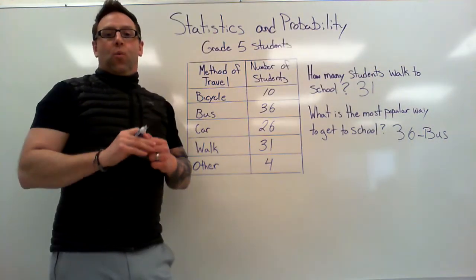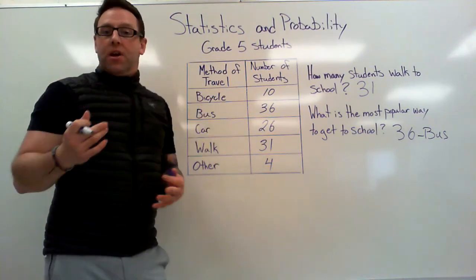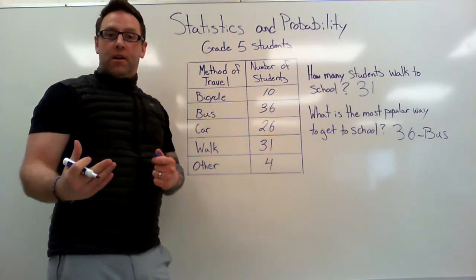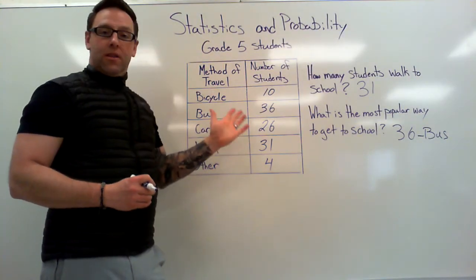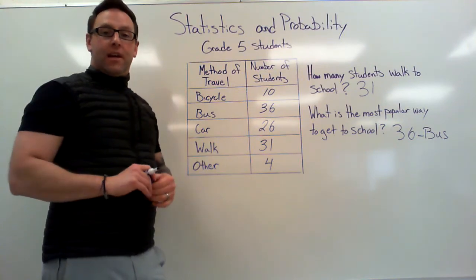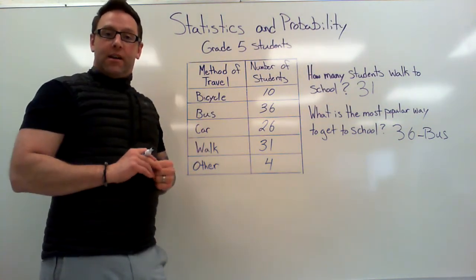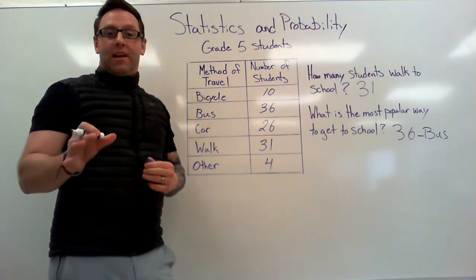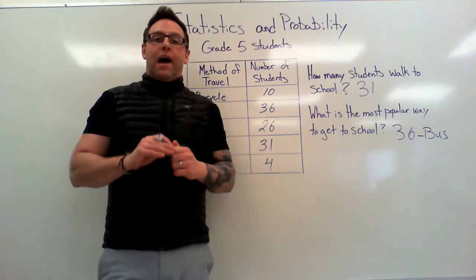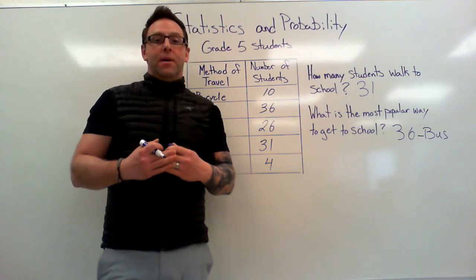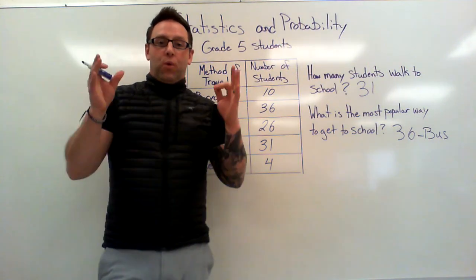So, why did we collect data? It's to find out information about a specific group of people we're interested in. In this case, we wanted to find out how grade 5 students got to school and went home. I collected the data, so that's first-hand data. If I had found this information somewhere else, that would be second-hand data. What we're going to do next is look at how we organize the data in a different way that makes it easy for people to see what's going on with those statistics.